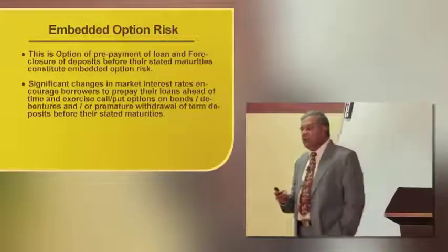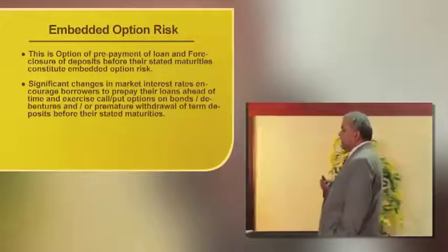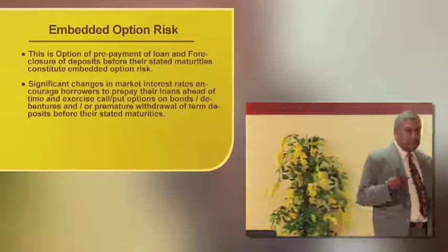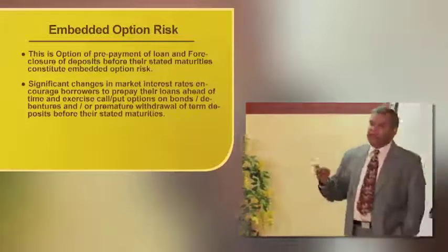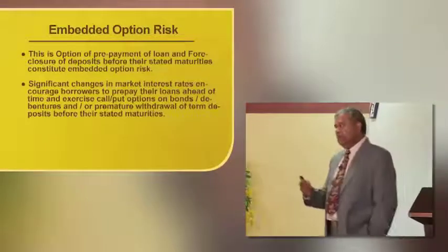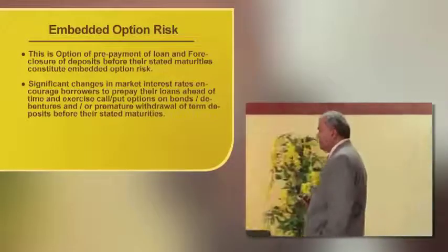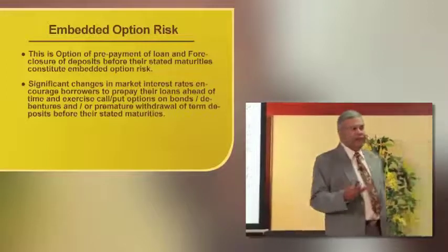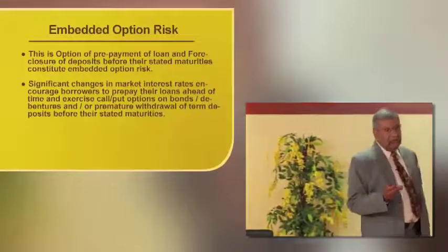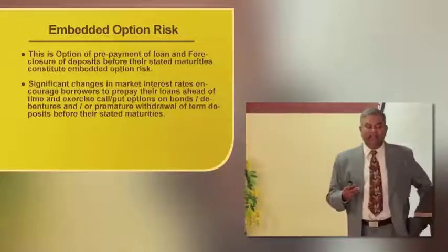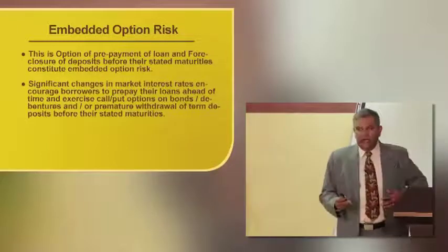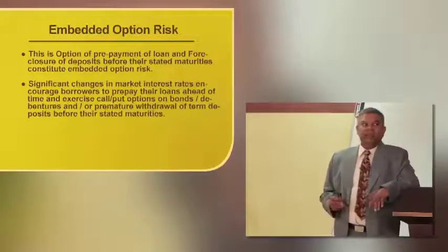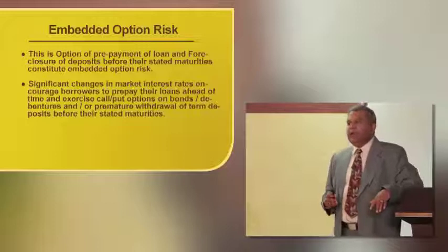To recapitulate: a bank accepts a five-year deposit and expects the deposit will come only on the fifth year, either for renewing or taking money. But after one month, surprisingly, the depositor comes back and asks for premature withdrawal. The bank cannot refuse to pay. The only control they have is they can say they will not pay any interest, but the principal is to be repaid. This is called embedded optionality risk.